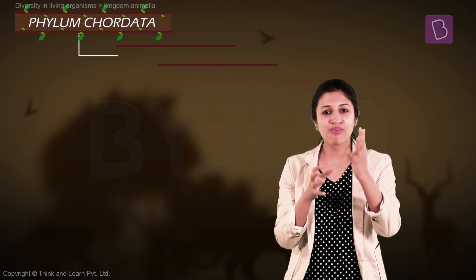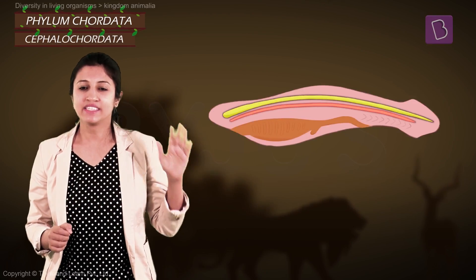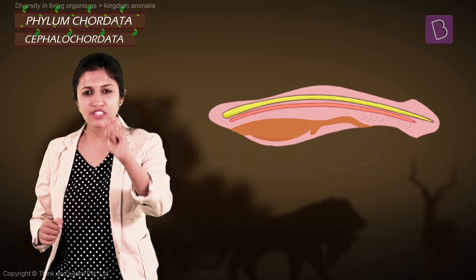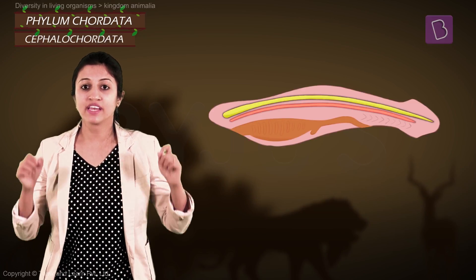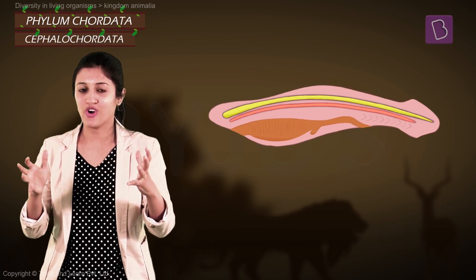All chordates share four features that make all of us chordates, and the least developed among them are the notochordates or the cephalochordates, which look like this and they have four distinct features that you will find in every single chordate named after the spinal cord.